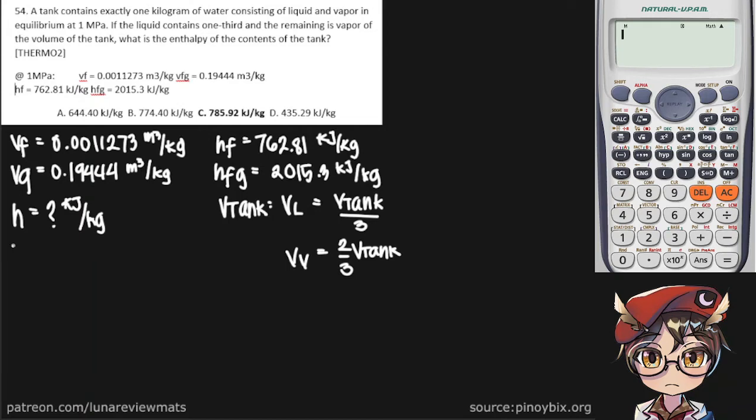Anyway, in order to get our enthalpy, you can simply use this formula. We're already given H sub f and H sub fg, so we just need to find our steam quality.